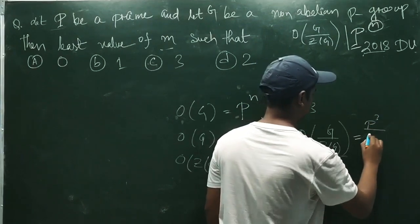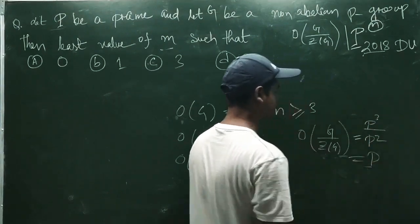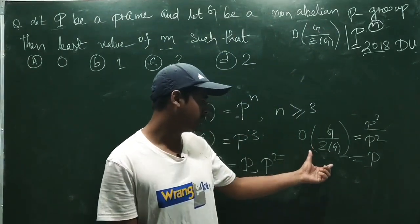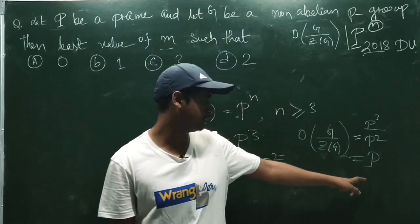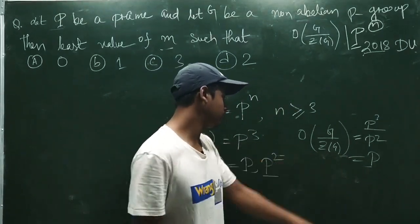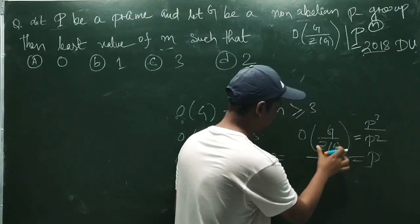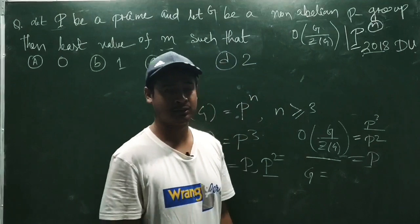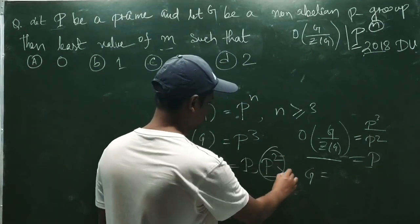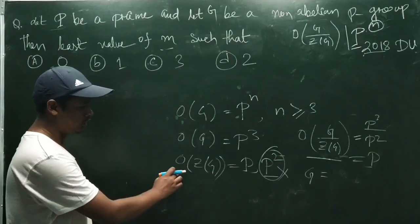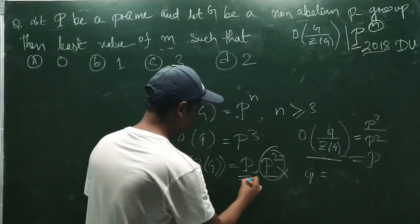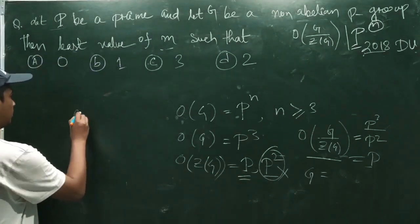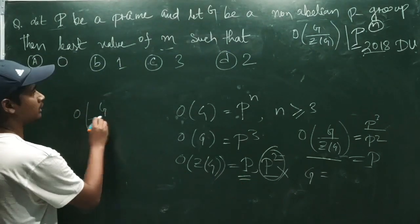We know that if the coefficient group Z by Z(Z) has order P, then this group becomes cyclic and hence abelian. So P squared is again not possible for the order of the center. Therefore, the order of Z(G) must be P.